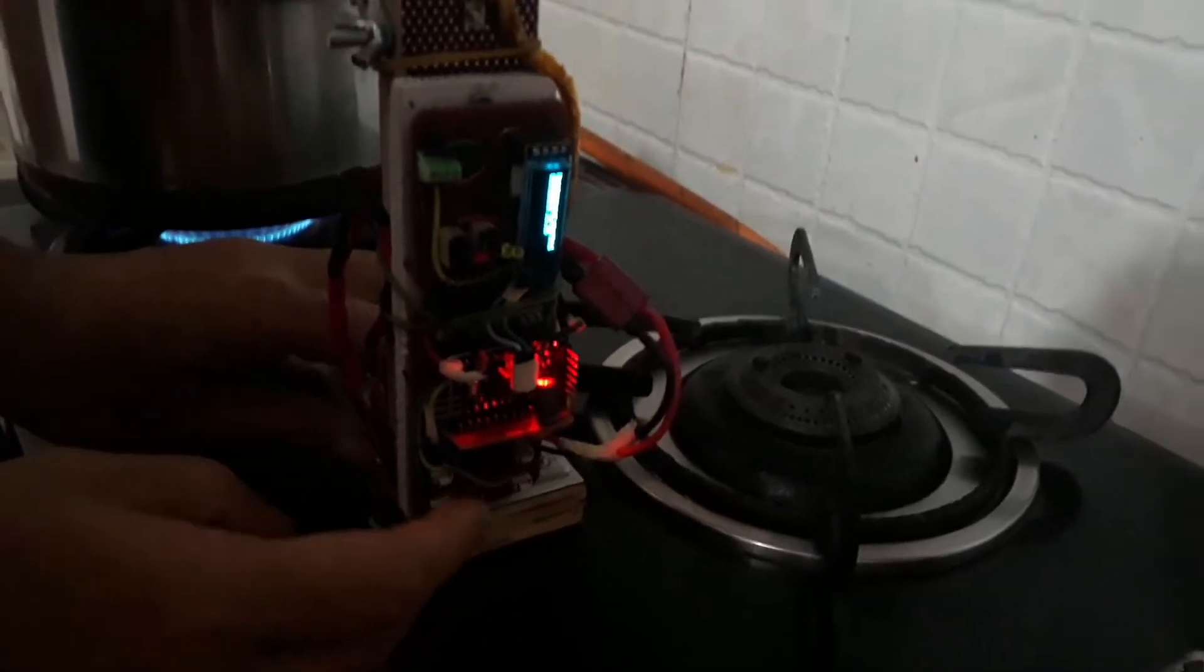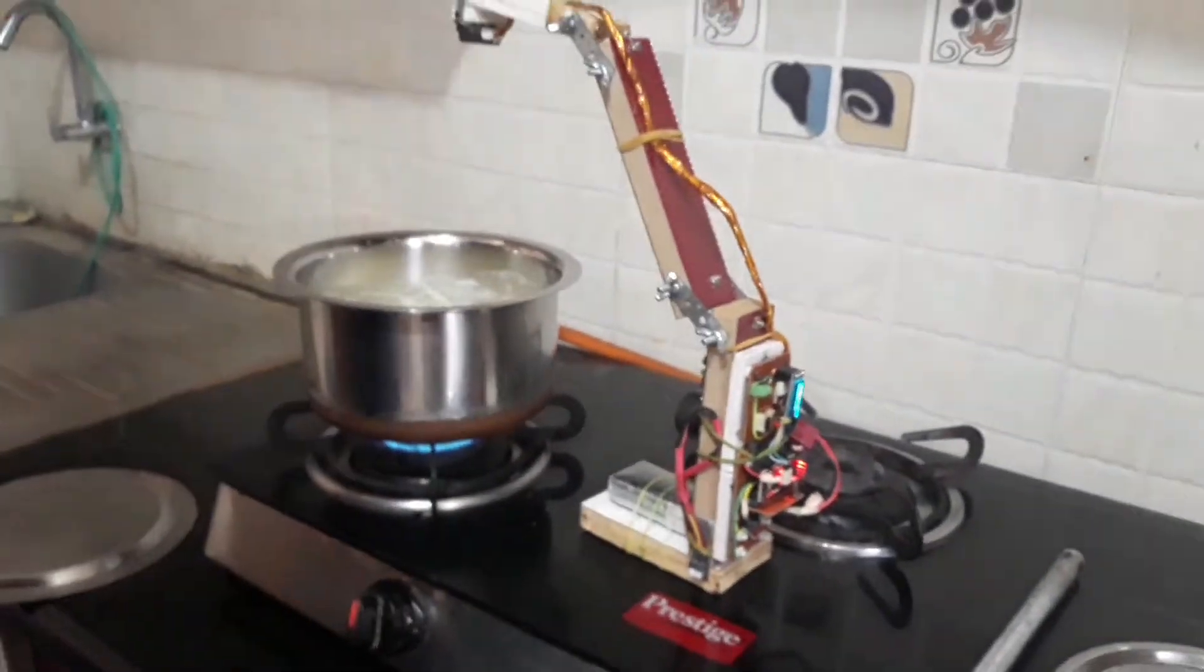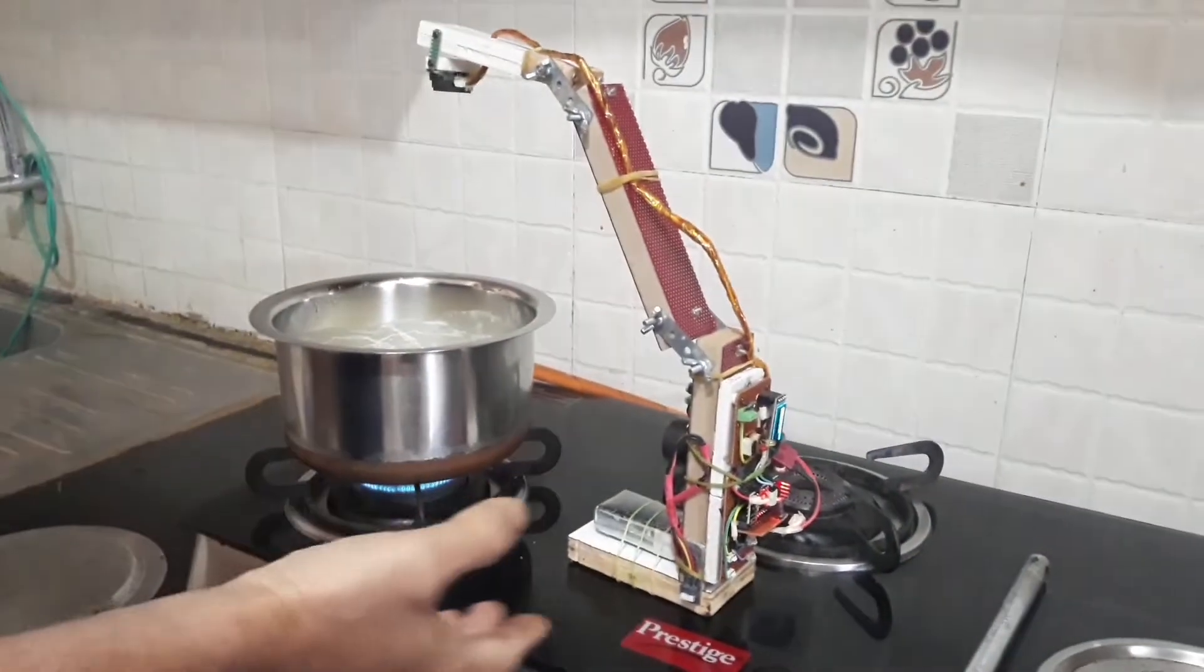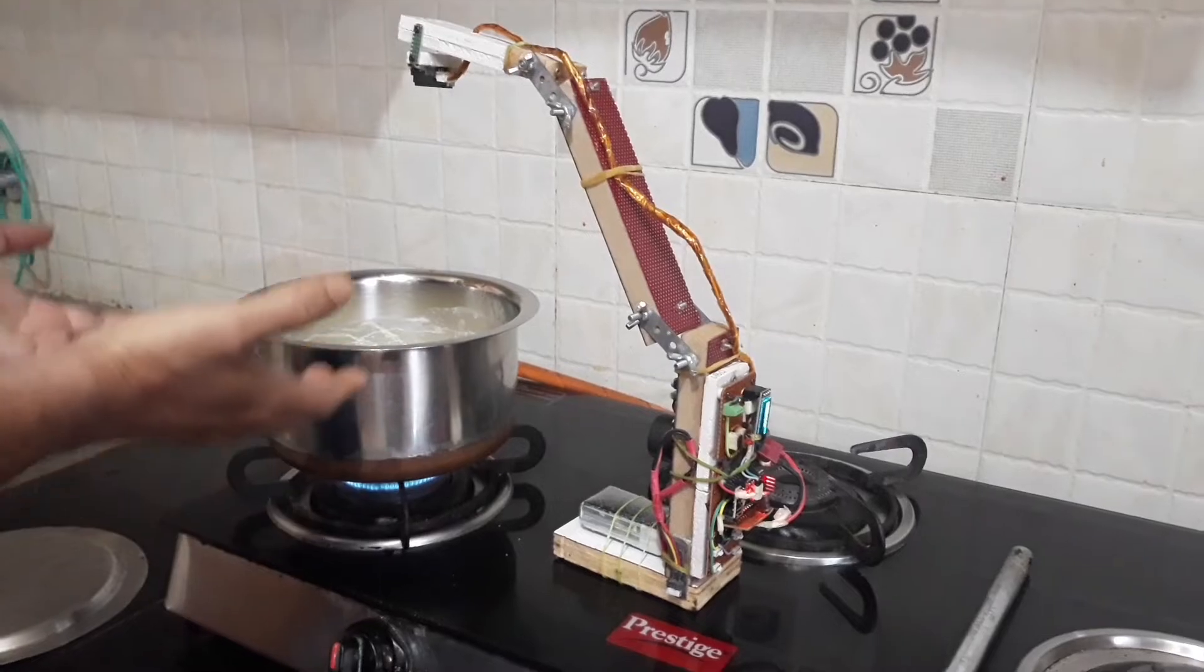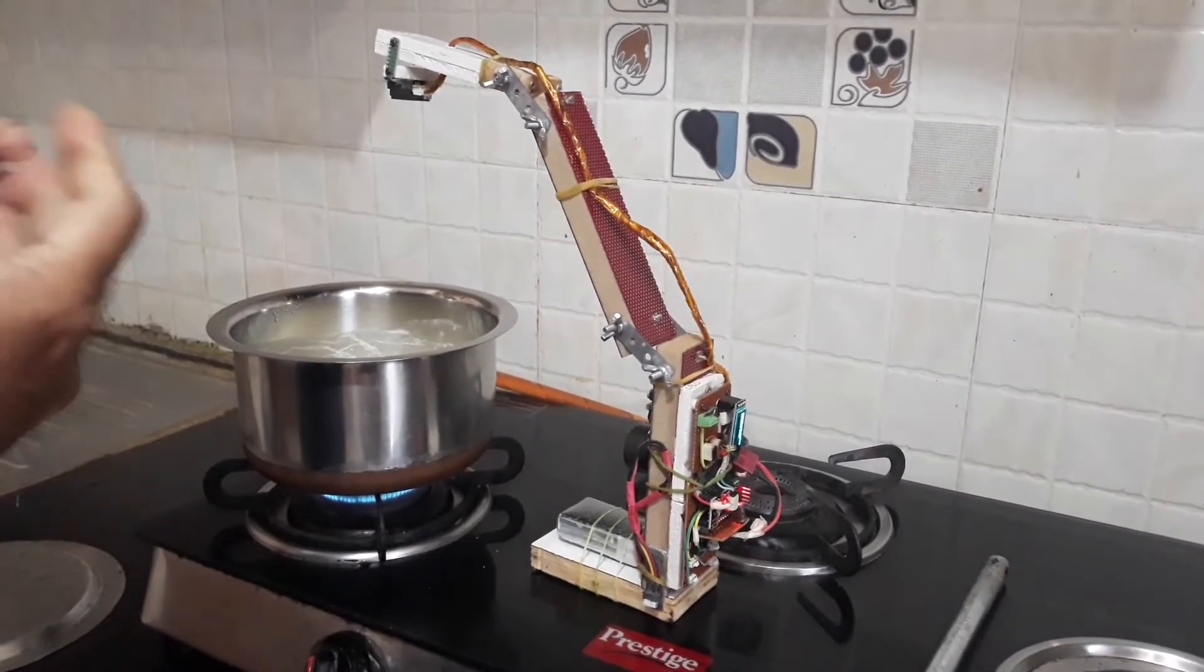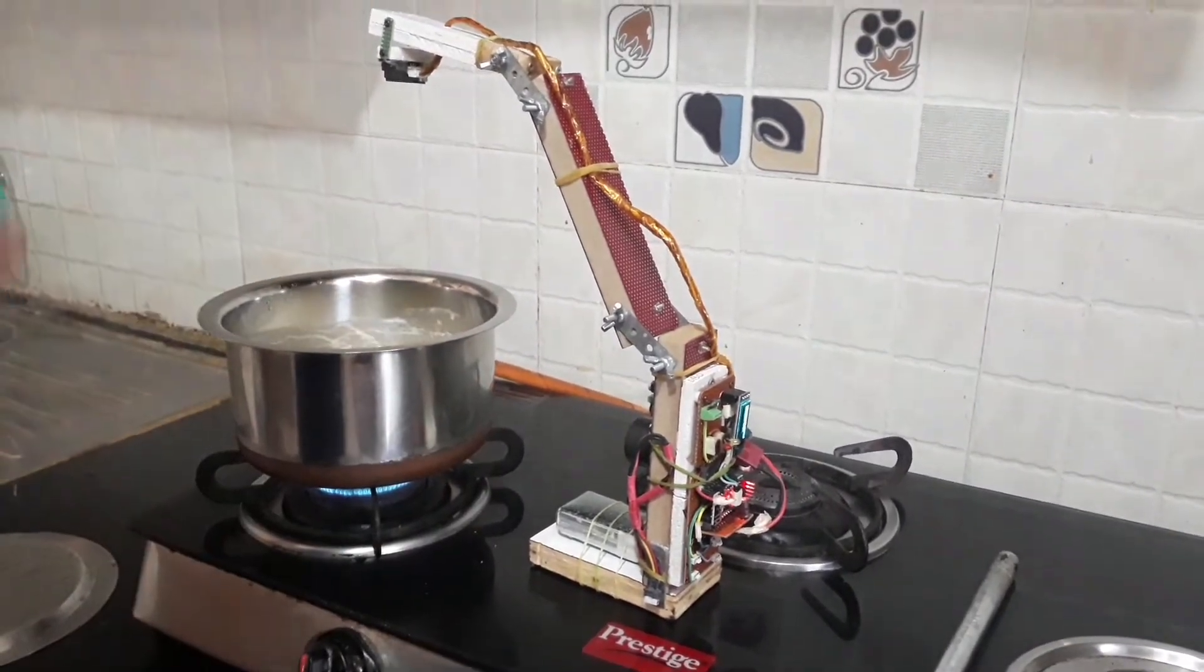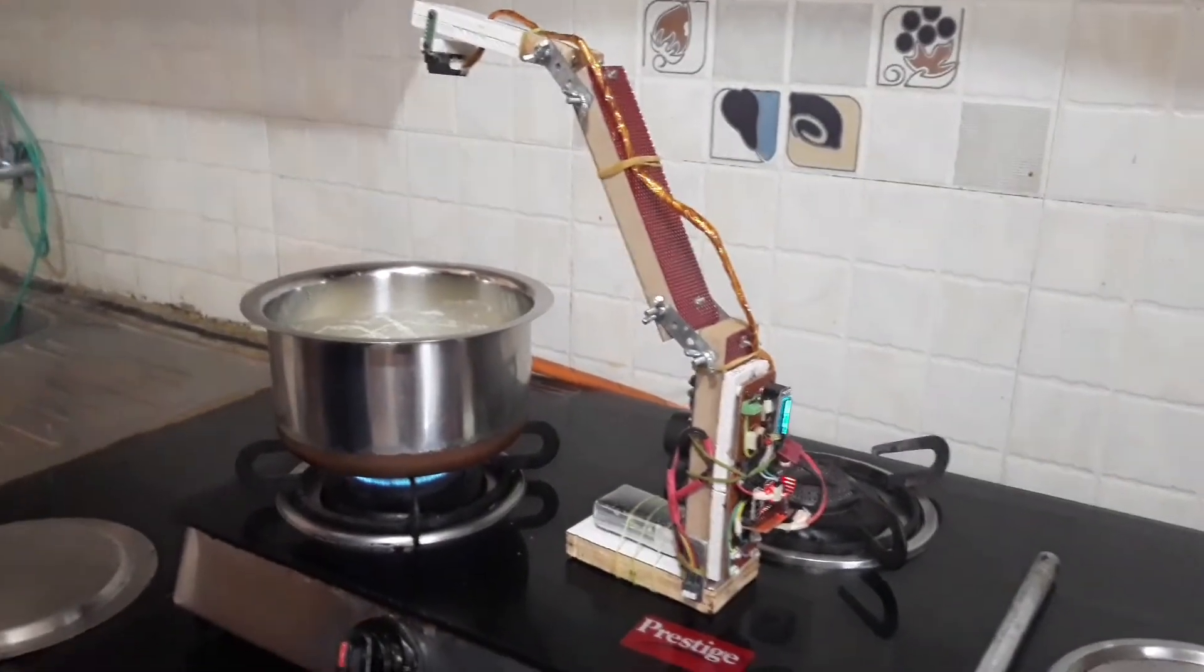So the boiling has started now. The system will beep now. And as the boiling starts and milk level raises and come to the top, the blinking will beep will continue and it will beep faster. So let us see how it is working.